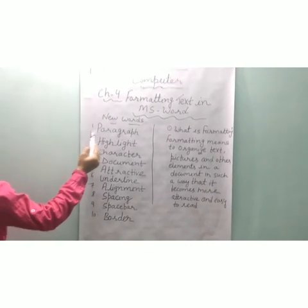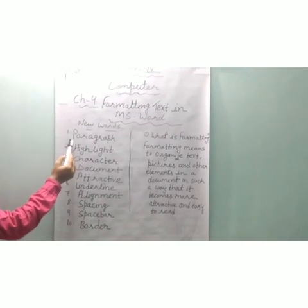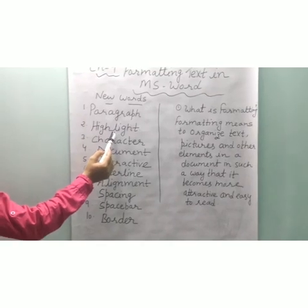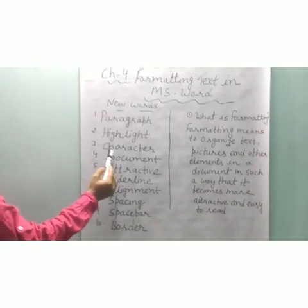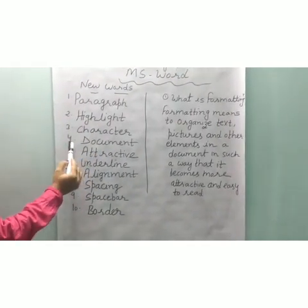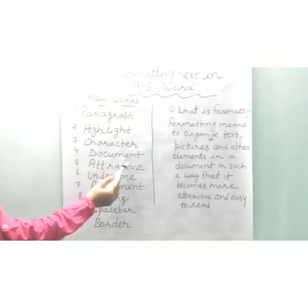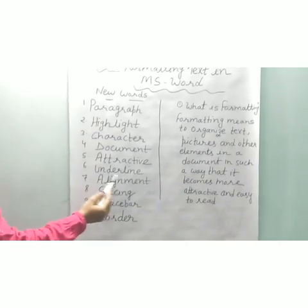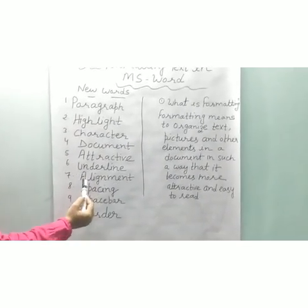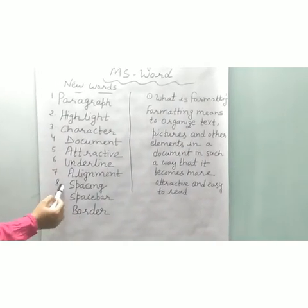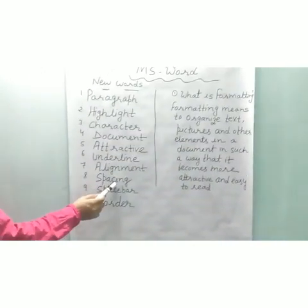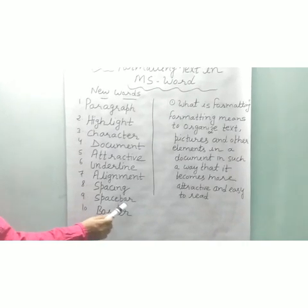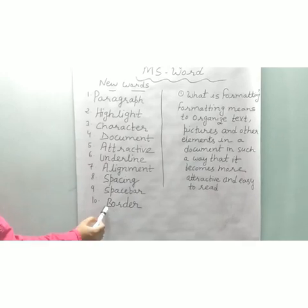Open your notebook and note down your new words. Number 1: Paragraph. Next: Highlight — H-I-G-H-L-I-G-H-T. Third: Character — C-H-A-R-A-C-T-E-R. Fourth: Document — D-O-C-U-M-E-N-T. Fifth: Attractive — A-T-T-R-A-C-T-I-V-E. Sixth: Underline. Seventh: Alignment — A-L-I-G-N-M-E-N-T. Eighth: Spacing — S-P-A-C-I-N-G. Ninth: Space bar — S-P-A-C-E-B-A-R. And tenth: Border — B-O-R-D-E-R. Complete these in your notebook.